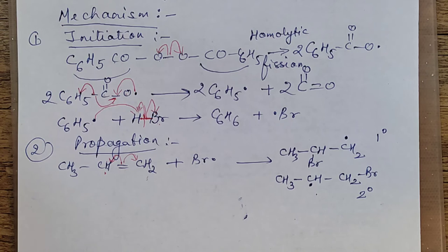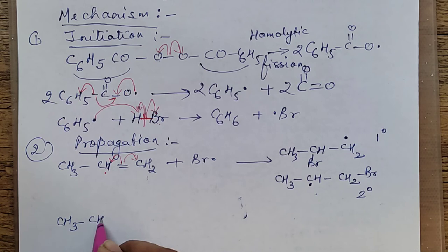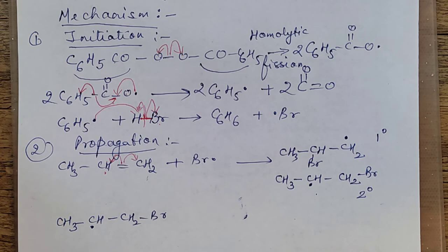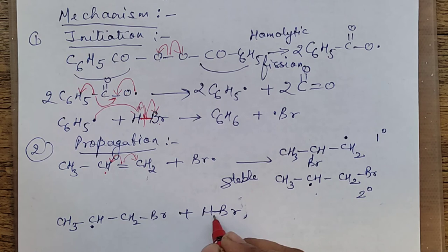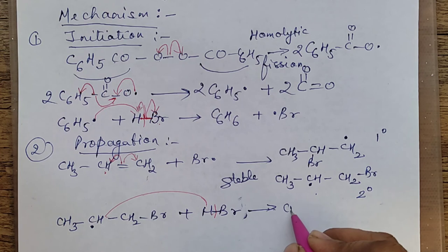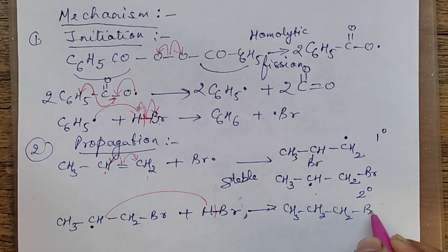The more stable secondary free radical — CH₃–CH•–CH₂Br — then reacts with another HBr molecule. The H–Br bond breaks homolytically: hydrogen adds to the radical carbon and a new Br• is regenerated. The product obtained is CH₃–CH₂–CH₂Br, that is 1-bromopropane, which is the major product. This also regenerates a Br• radical to continue the chain.